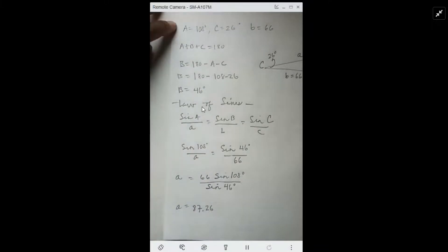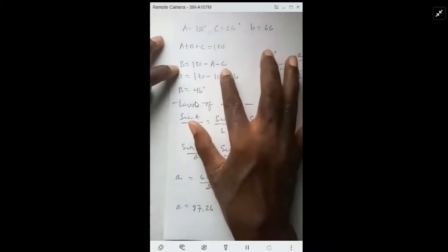Here's what was given. The sum of a triangle: angle A plus angle B plus angle C equals 180 degrees. So B equals 180 minus A minus C, which gives us B equals 46 degrees.